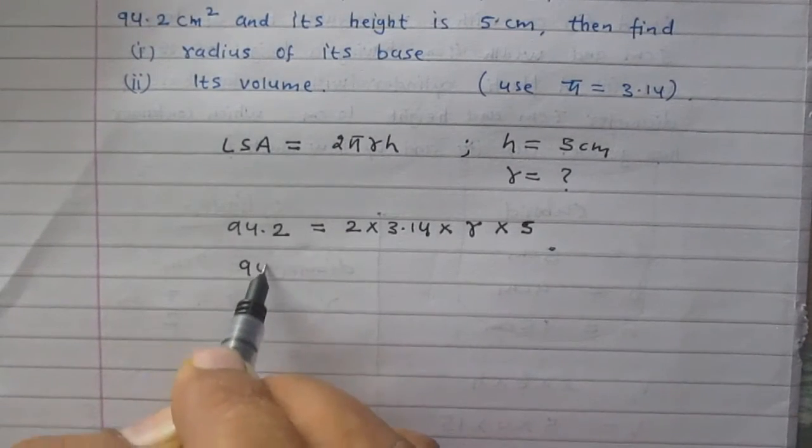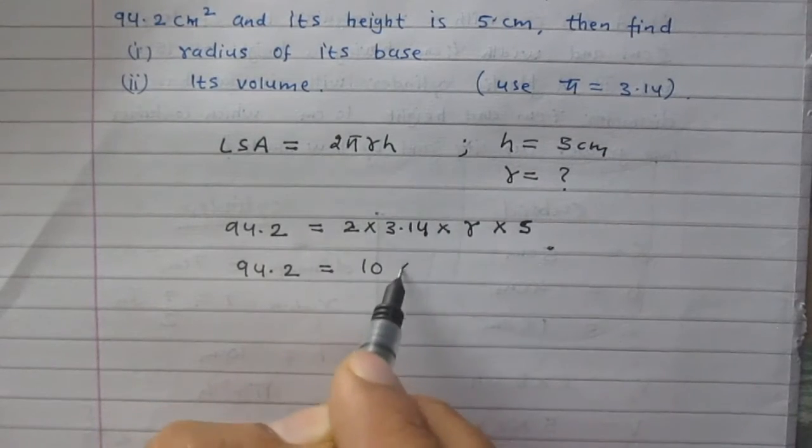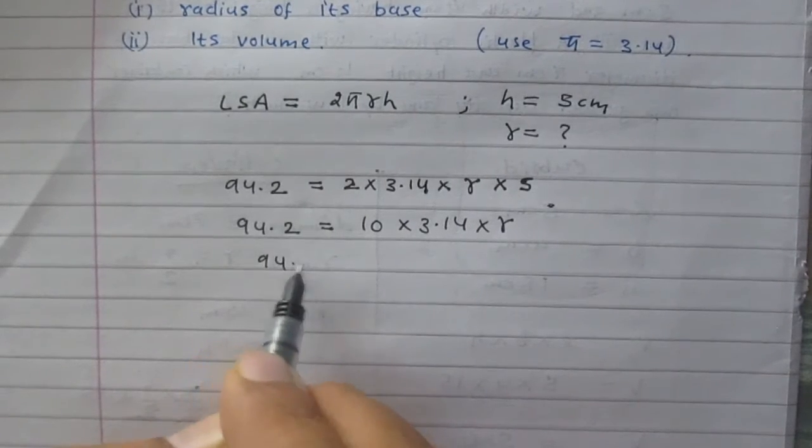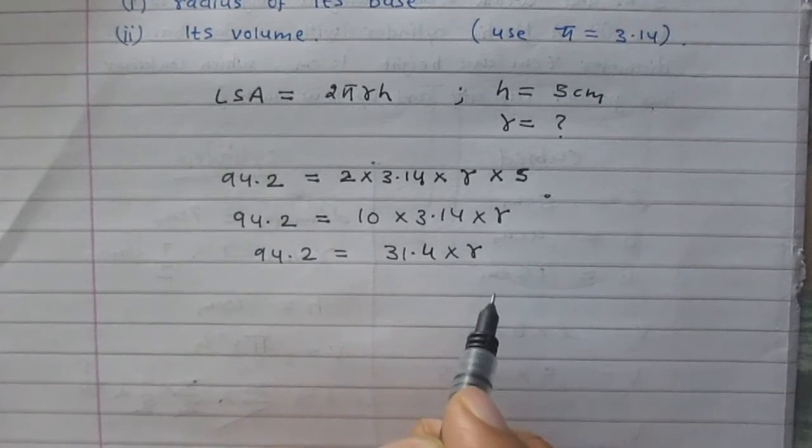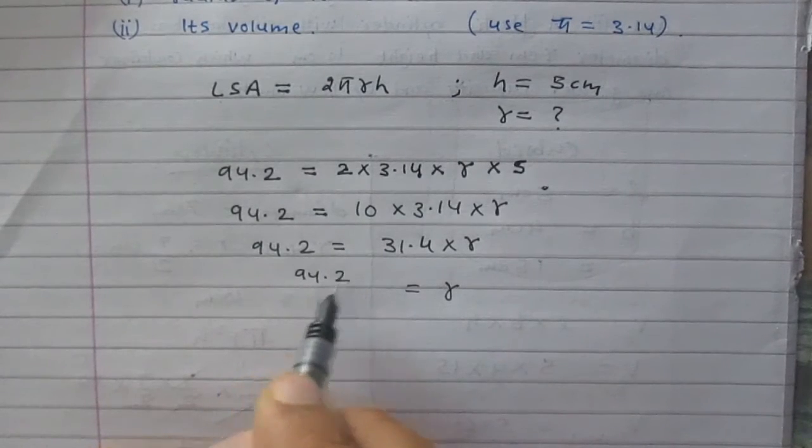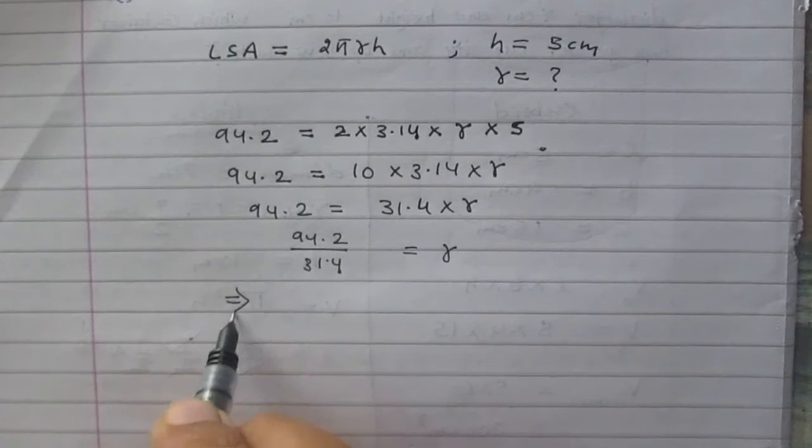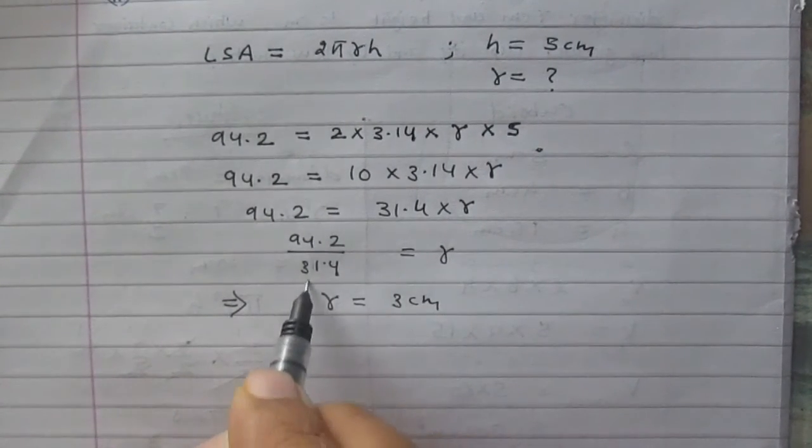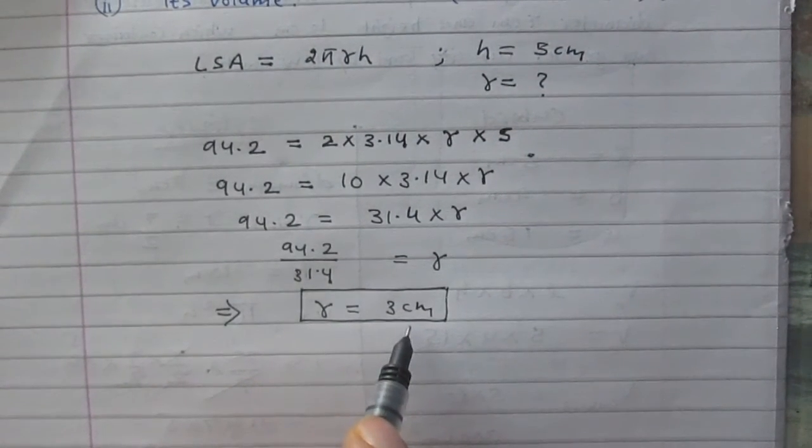So we get 94.2 equals 10 times 3.14 times r. 94.2 equals 31.4 multiplied by r, or you can say r equals 94.2 divided by 31.4. So you will get the value of r is 3 cm. So we can say that radius of the base of this cylinder is 3 cm.